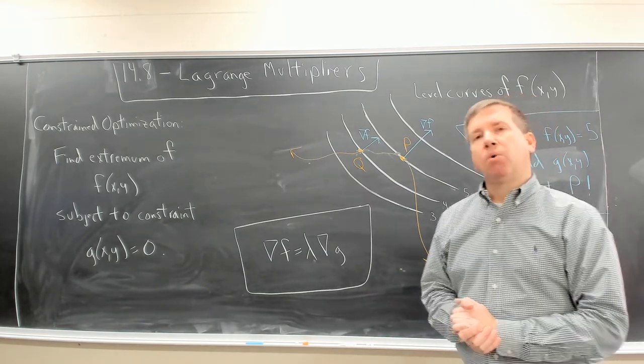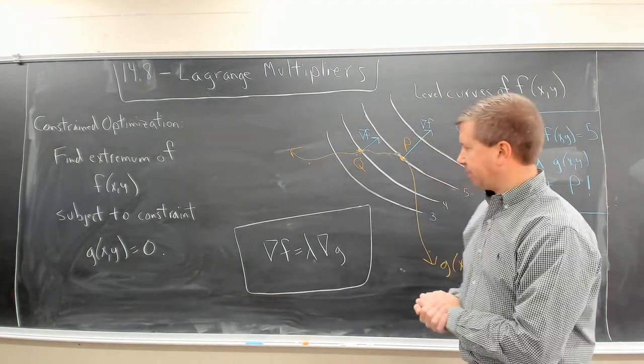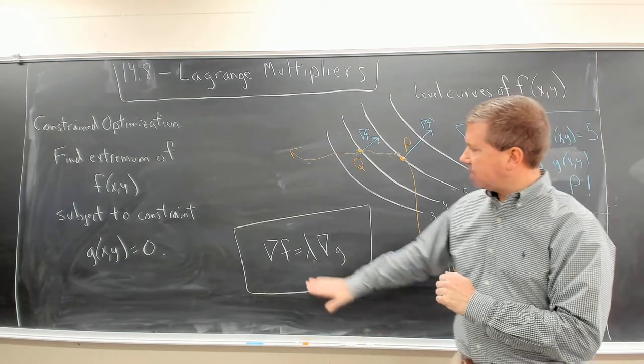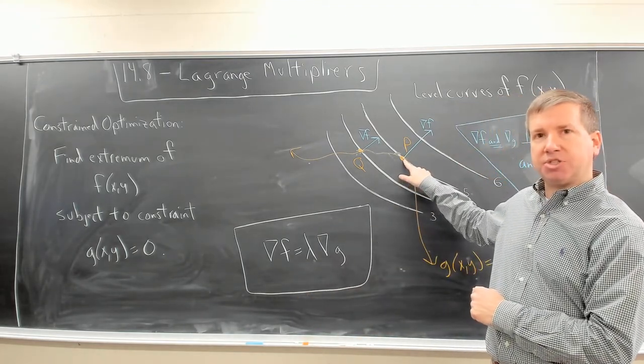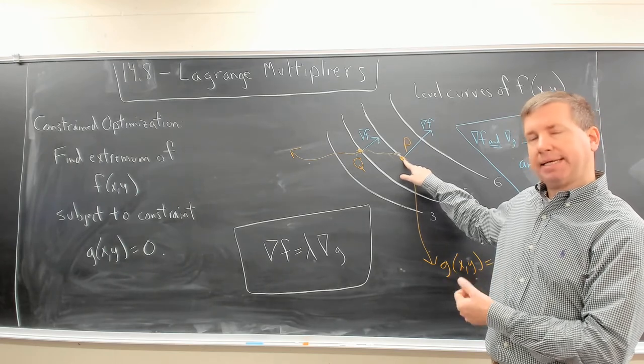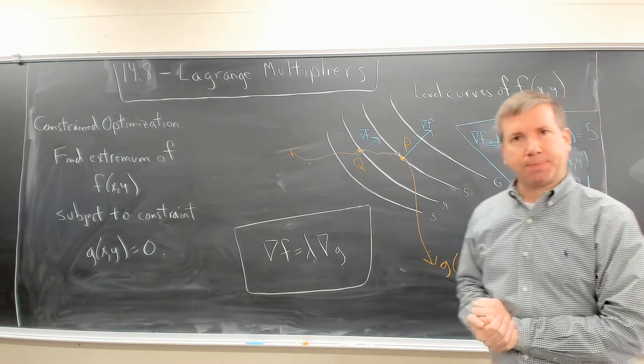We will look at an example next, and all of this is also in our textbook. We'll look at an example next, but this is the main idea. Looking for this point of tangency between the level curve and our constraint curve.